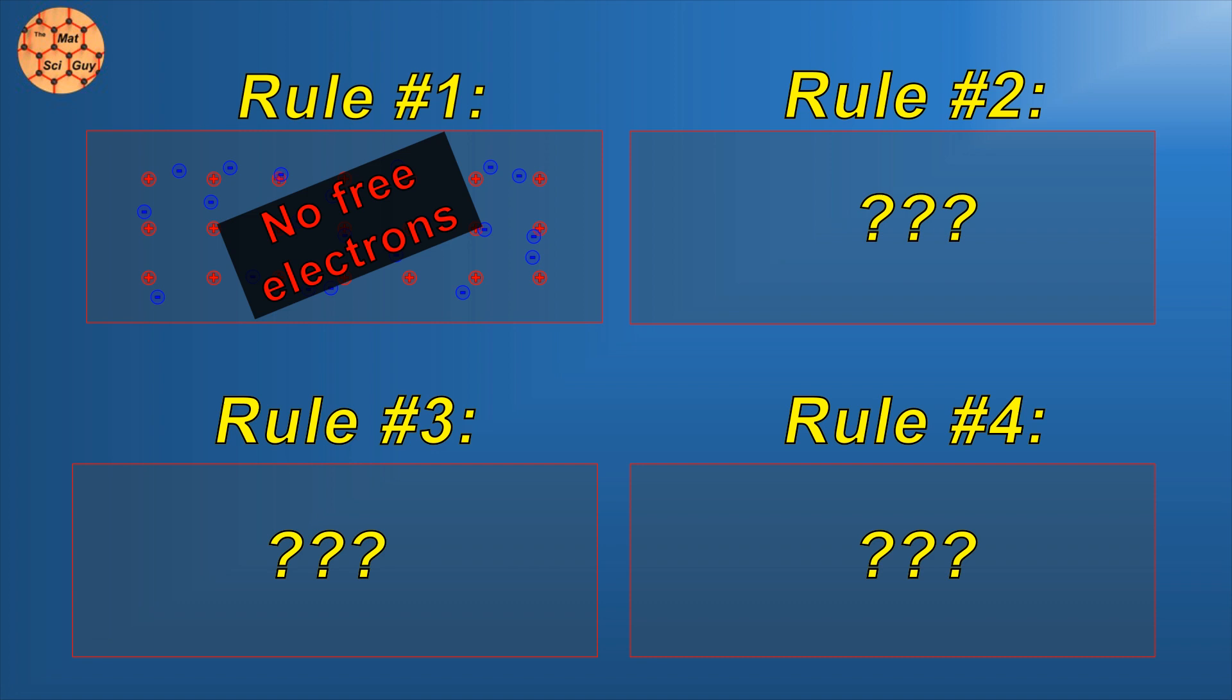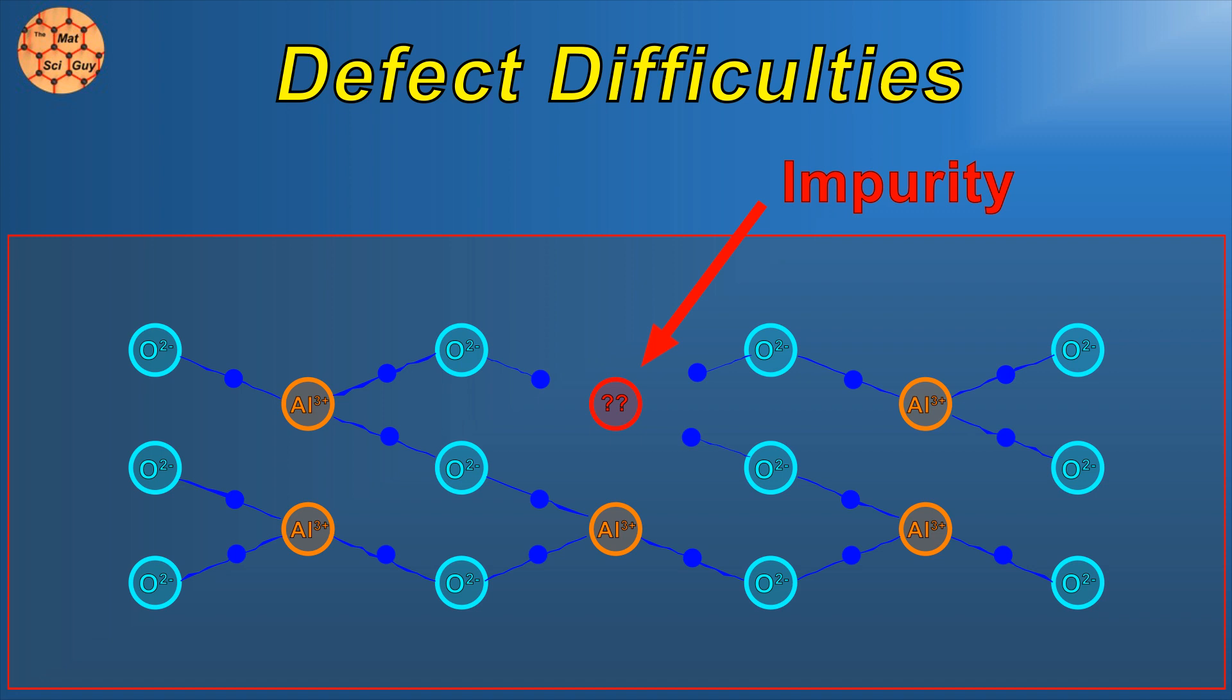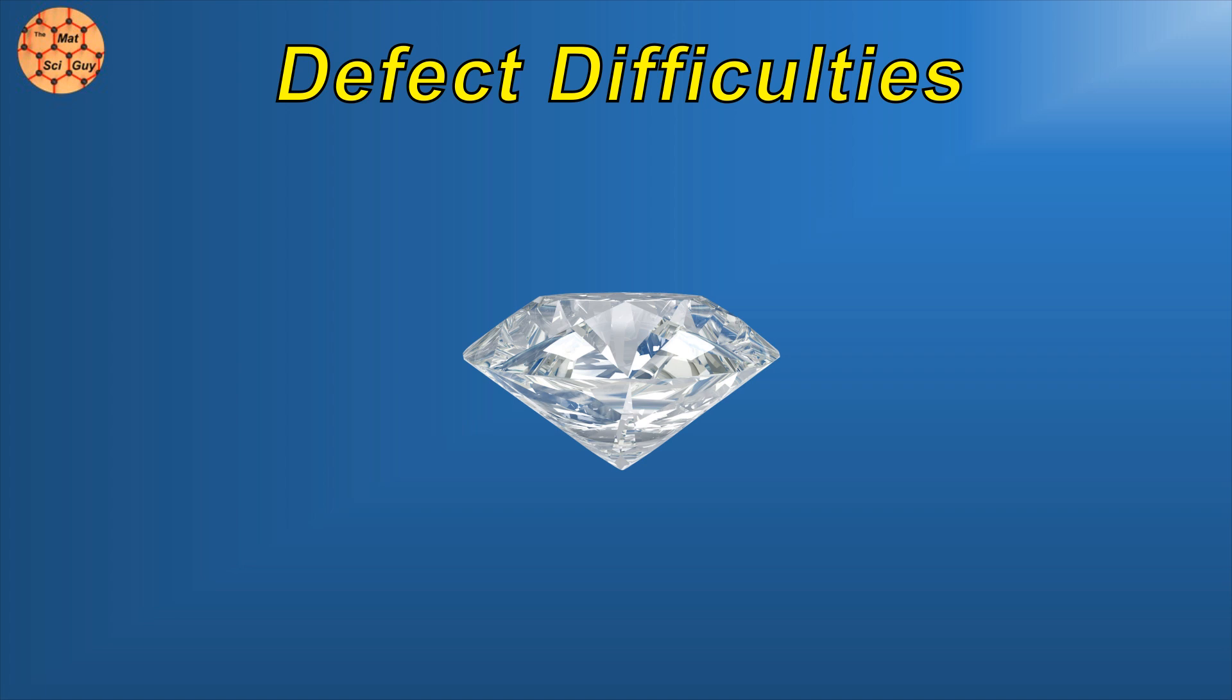For example, if there are impurities in the material, it can create electrons that aren't as tightly bound and free to interact with visible light. One of the most well-known examples is diamond, where the normally transparent and colorless material can turn all sorts of colors depending on which impurity is present.